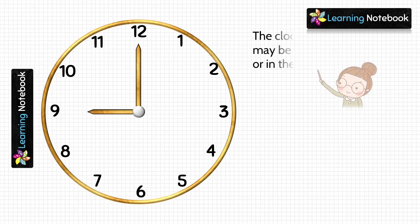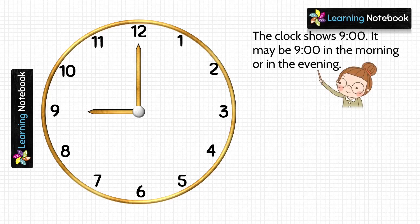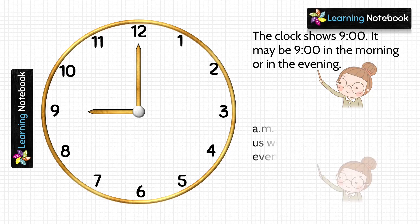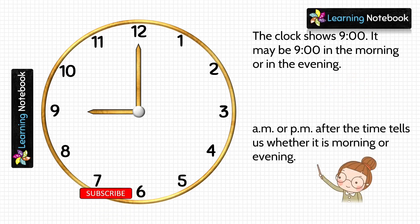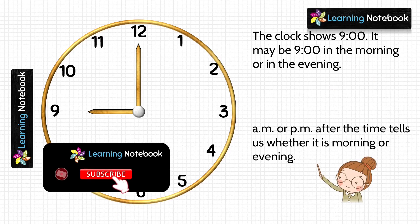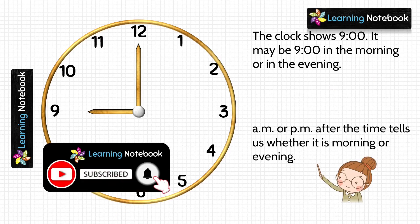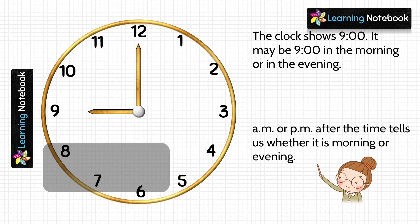Look at this clock. It is showing 9 o'clock. It may be 9 in the morning or 9 in the evening. So, how do we know whether it is 9 in the morning or 9 in the evening? AM or PM after the time tells us whether it is morning or evening.